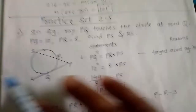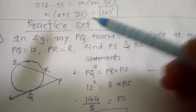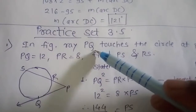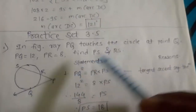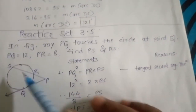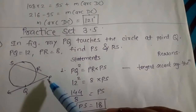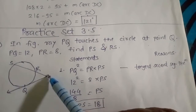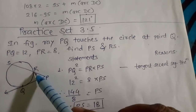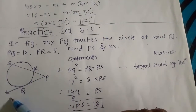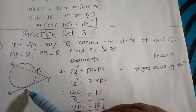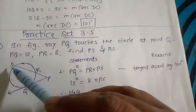This is the last exercise from this chapter. The first example: in the figure, ray PQ touches the circle at point Q. PQ is equal to 12, PR is equal to 8. We have to find out PS and RS. Here we have a tangent and a secant.